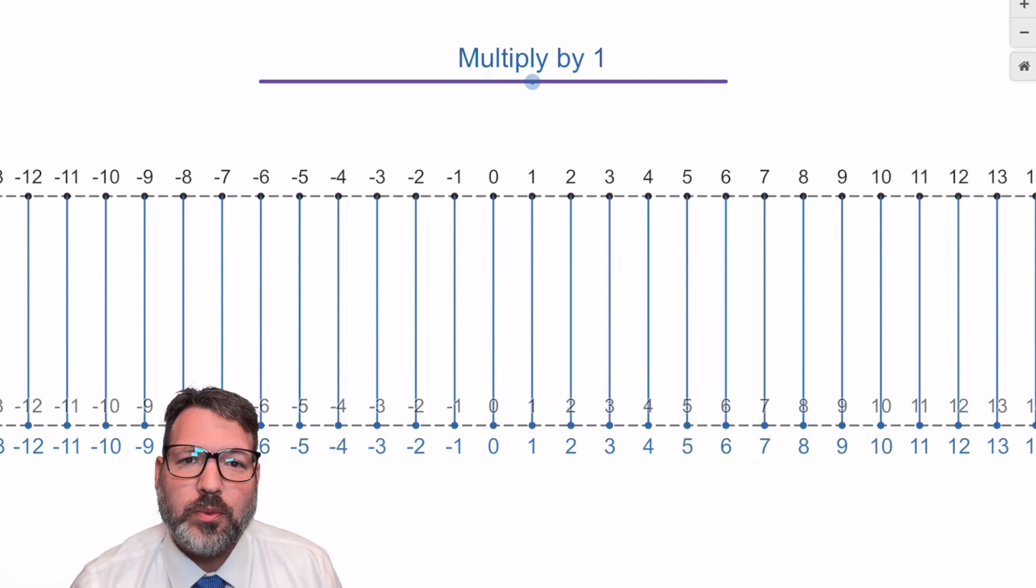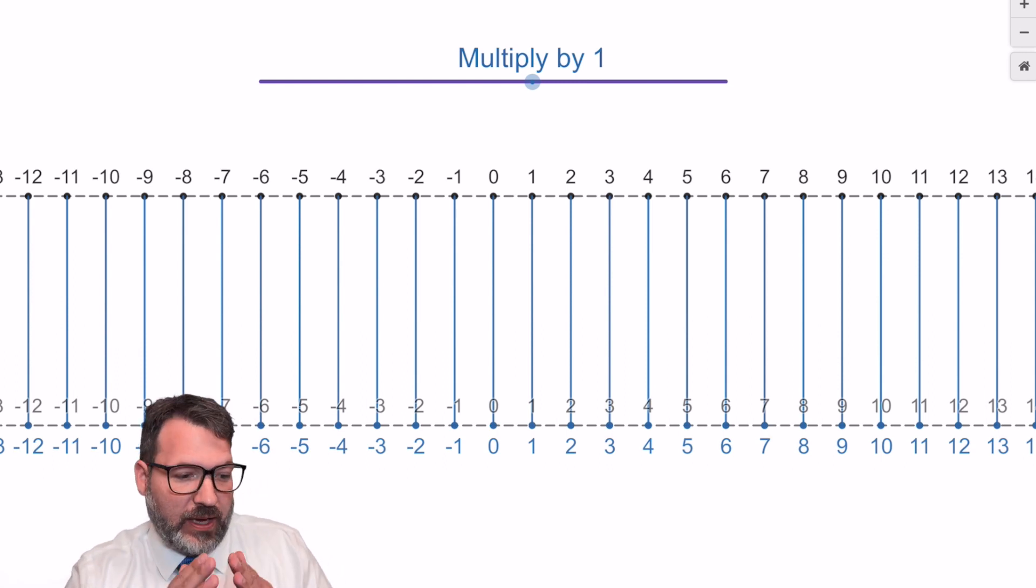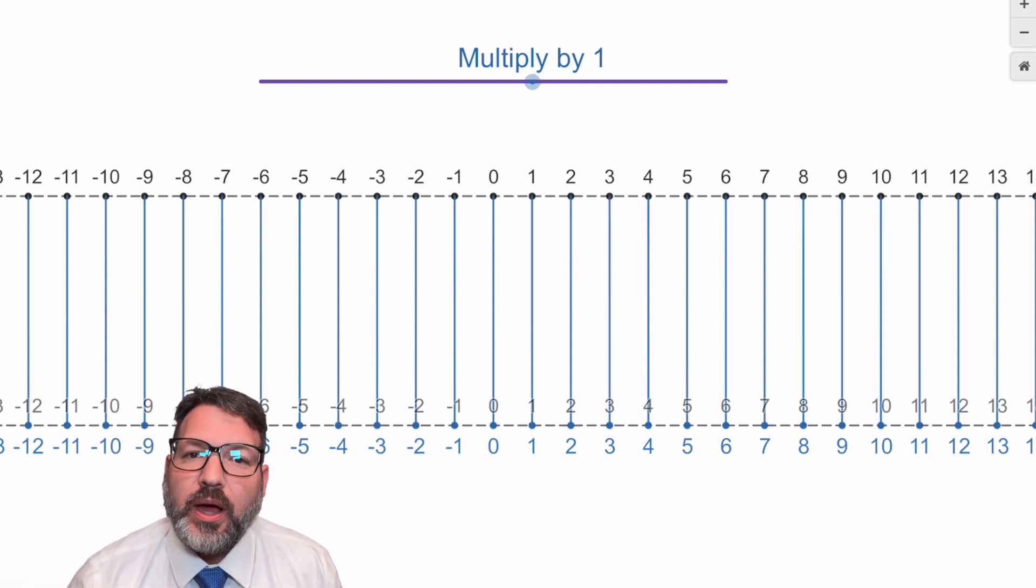And of course, many operations don't work this way at all. If you add two negatives together, you don't get a positive number back. You get what you would expect. You get a different negative number back. Negative 6 plus negative 4 is negative 10. They get more negative. They move down the number line.